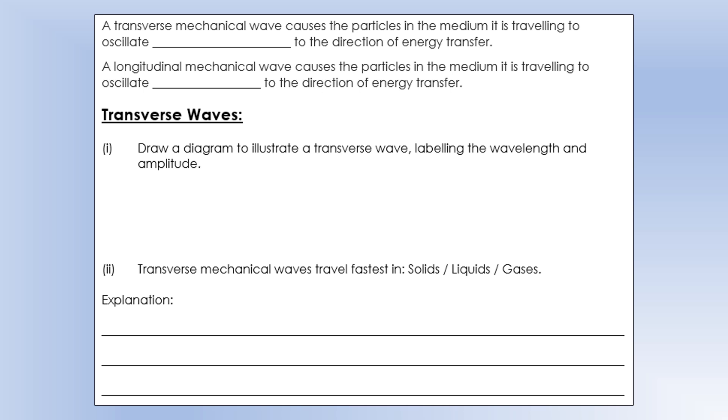So we're talking about transverse mechanical waves. Mechanical just means it's making particles oscillate. A transverse mechanical wave causes the particles in the medium to oscillate perpendicular to the direction of energy transfer, whereas a longitudinal wave causes them to oscillate parallel to the direction of energy transfer.